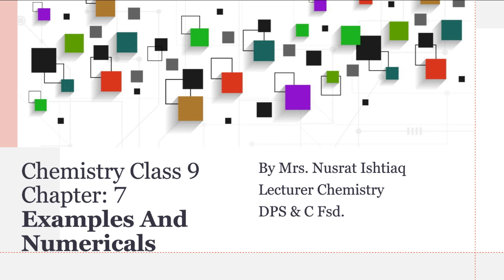Assalamualaikum dear students, today we are going to solve different examples and numericals in chapter number seven. In these examples and numericals we have to find out the oxidation number of any one element present in the molecule. So let's start the first example.